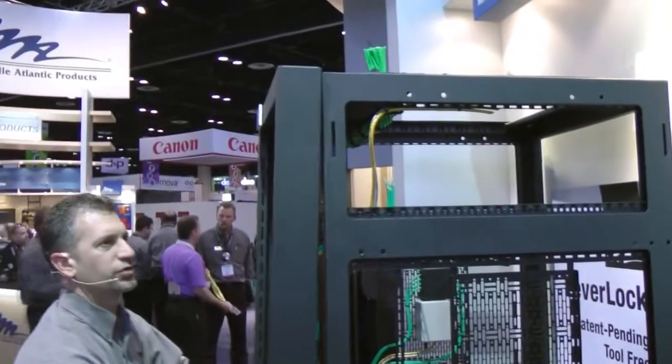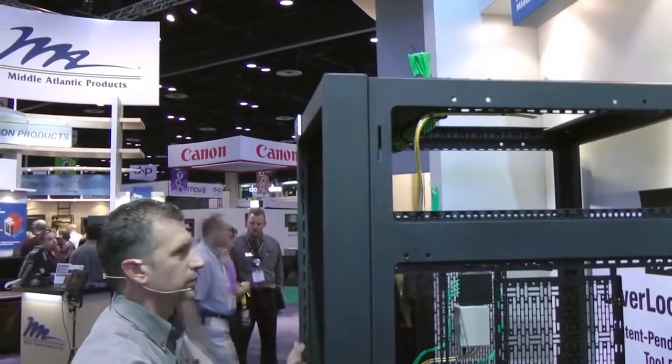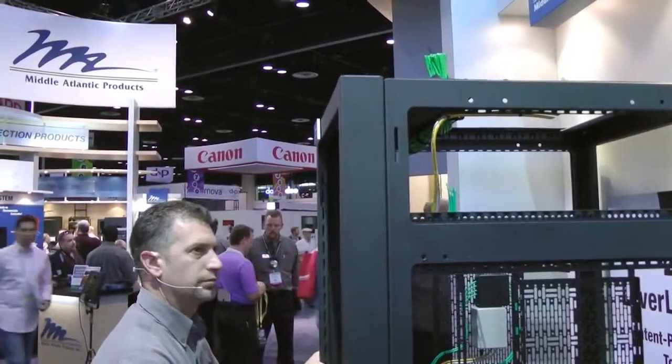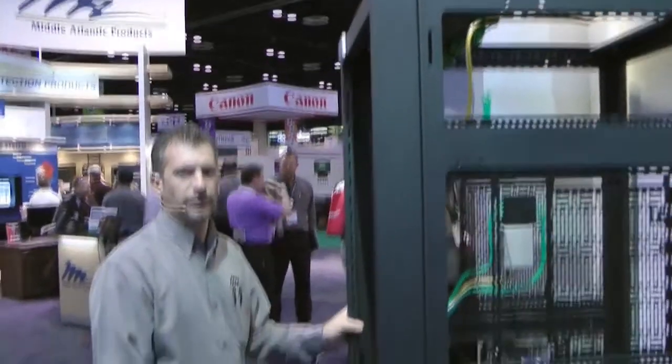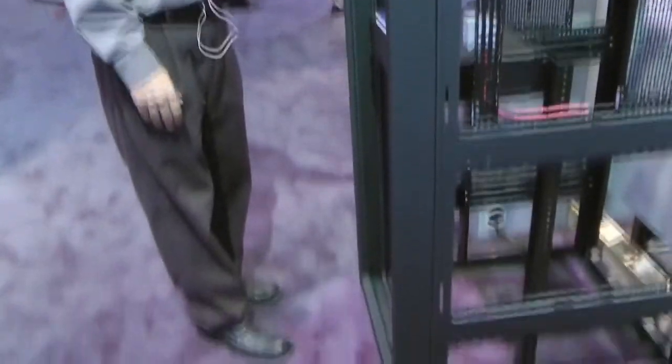Optional extender bays provide an extra three inches of depth on the front or rear of the rack and can be added at any time while using the same doors. This can be a real problem solver.